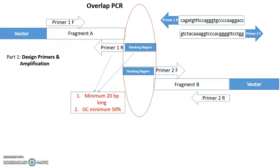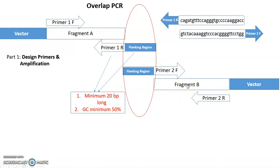Now I can show you which primers to use. Previously I showed primer 1F and primer 2R — you have to use these two primers to perform this overlap PCR. You have primer 1F, primer 2R, and the template which is the mixed fragment A and fragment B extracted from the gel. You can follow the normal overlap PCR parameters for this process.